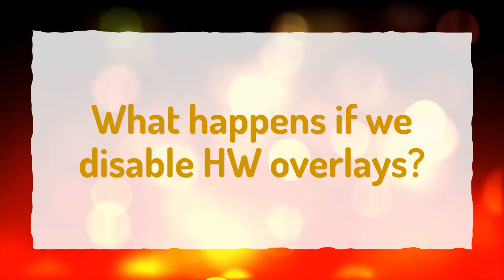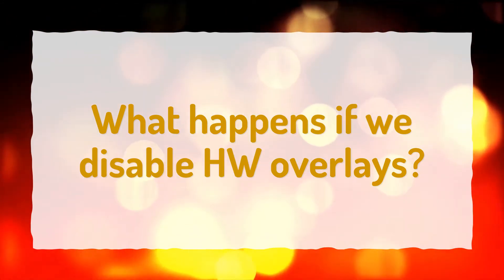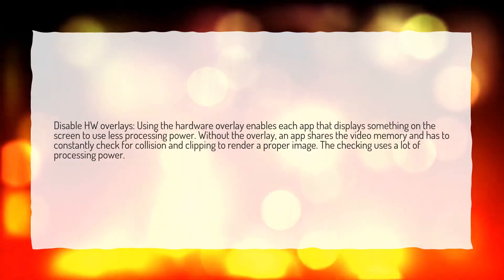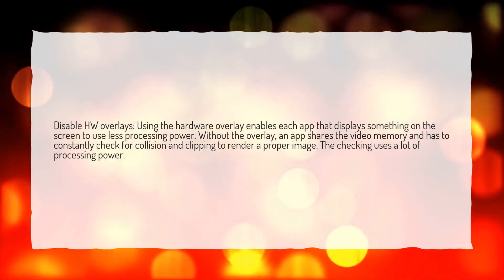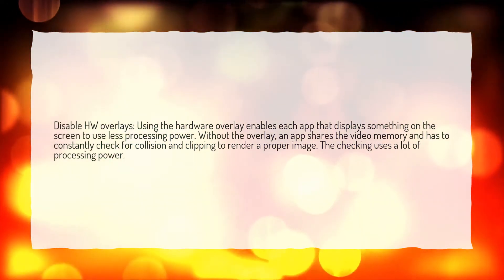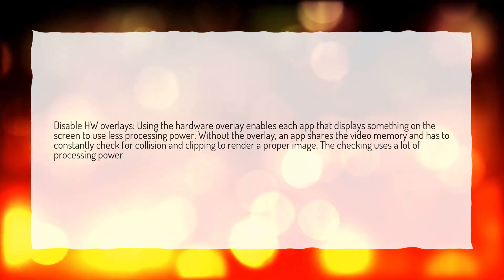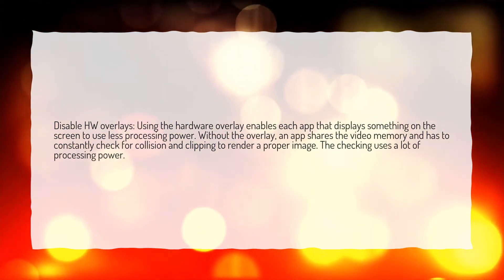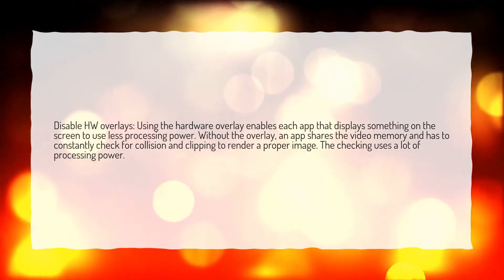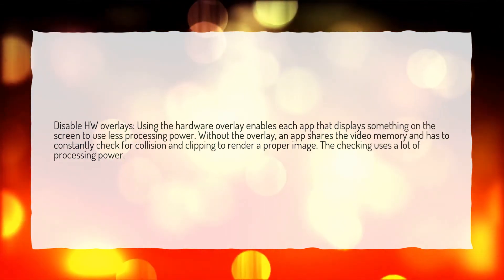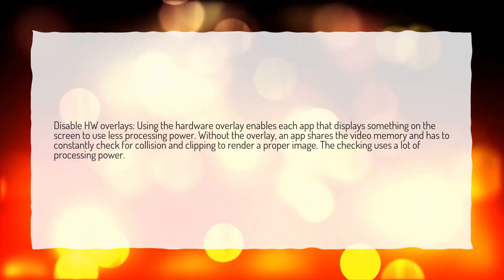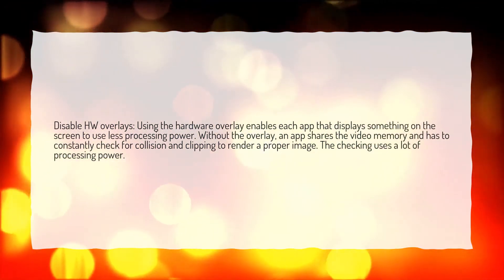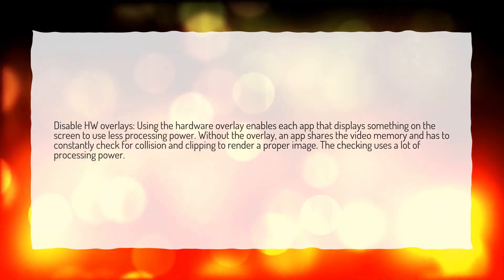What happens if we disable HW overlays? Using the hardware overlay enables each app that displays something on the screen to use less processing power. Without the overlay, an app shares the video memory and has to constantly check for collision and clipping to render a proper image. The checking uses a lot of processing power.